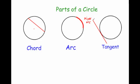A tangent is a straight line which touches a circle once and carries on. So it's a straight line which just touches a circle and carries on like so. And that's called a tangent.